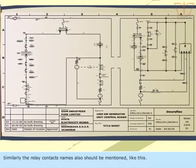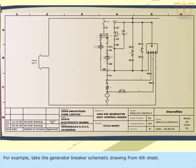Similarly, the relay contact names also should be mentioned like this. For example, take the generator breaker schematic drawing from the sixth sheet.